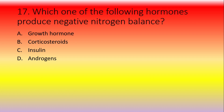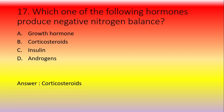Which one of the following hormones produces negative nitrogen balance? Option A: growth hormone, option B: corticosteroids, option C: insulin, option D: androgens. The answer is corticosteroids, because they increase the utilization of amino acids for energy metabolism, reducing nitrogen balance. Growth hormone, insulin, and androgens are usually growth promoters.